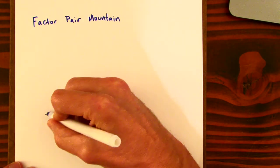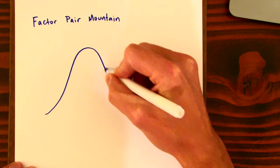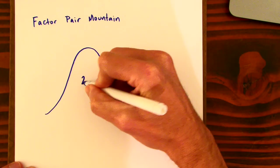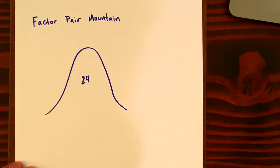So I'm just going to draw a basic mountain shape, and we'll say this is 24 that we're looking for, and we always start climbing a mountain at the bottom. So we're going to start with one.